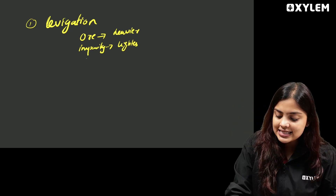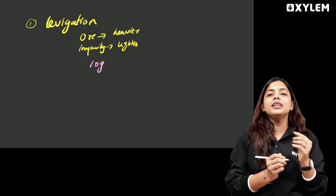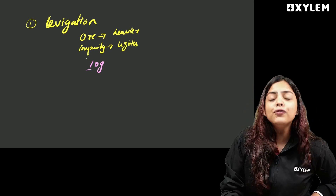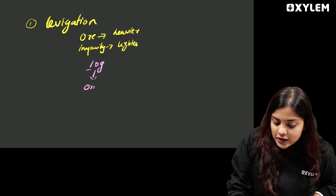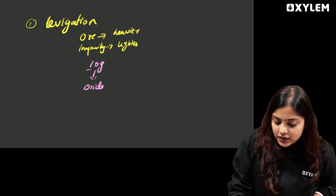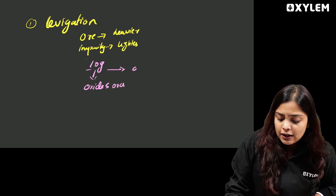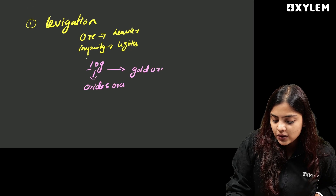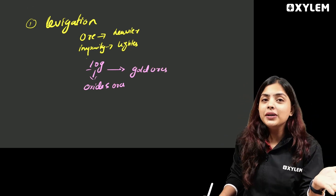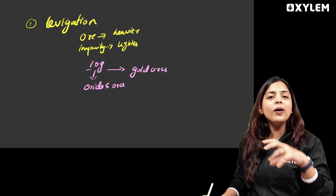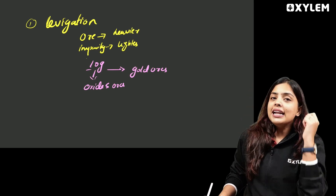Here is an example. L4 stands for levigation. O4 stands for oxide ores. G4 stands for gold ores — gold is an example. Oxide ores and gold ores are concentrated by levigation.